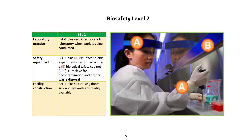BSL 2 laboratory practice: BSL 1 requirements plus restricted access to laboratory when work is being conducted. Safety equipment: BSL 1 plus face shields; experiments performed within a biological safety cabinet; autoclave for decontamination and proper waste disposal. Facility construction: BSL 1 plus self-closing doors; sink and eyewash are readily available.